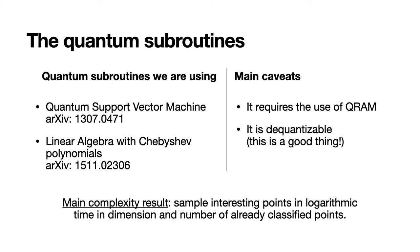We will be using quantum linear algebra techniques, such as an article on quantum support vector machines, and another on solving linear systems of equations. They will require the use of qRAMs, and can be dequantized. Our main complexity result is that the cost is polylogarithmic in the dimension of the space and the number of already classified points.